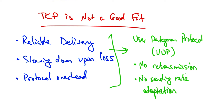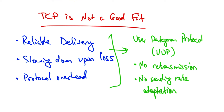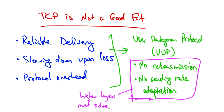Because UDP does not automatically retransmit packets or adjust the sending rate, many things are left to higher layers, potentially the application, such as when to transmit the data, how to encapsulate it, whether to retransmit, whether to adapt the sending rate, or to adapt the quality of the video or audio encoding. So higher layers must solve these problems.